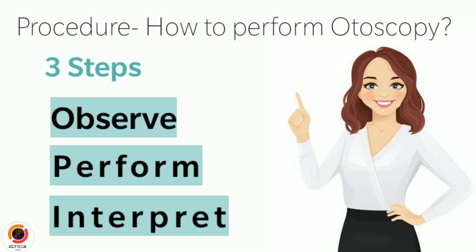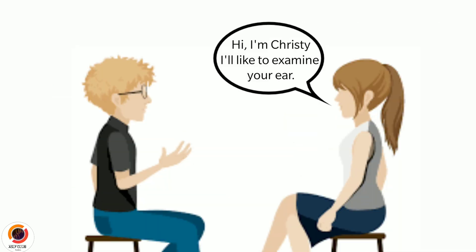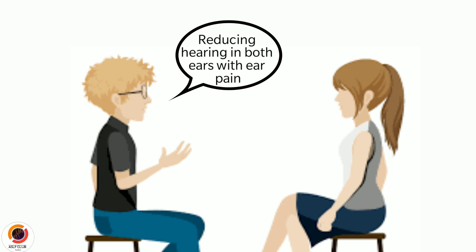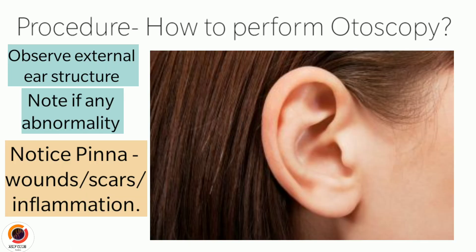Basically, otoscopy is done with three steps you should remember: observe, perform, and interpret. First, the examiner introduces him or herself and can also ask a few questions about the ear problem, such as taking history or complaints. While doing so, the examiner should observe the external ear structure and note any abnormality seen — examining the health of the external ear, the pinna, noting signs such as wounds, scars, and inflammation.